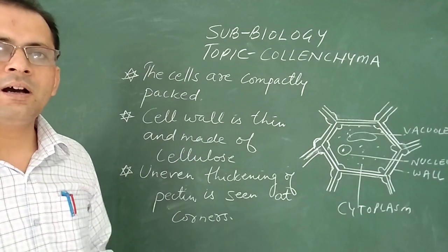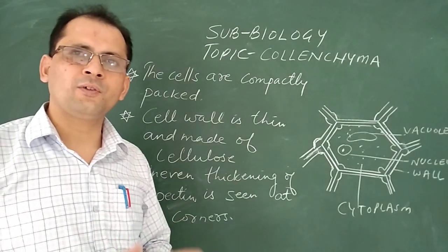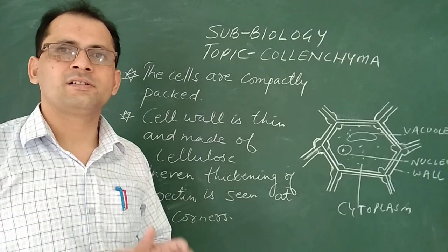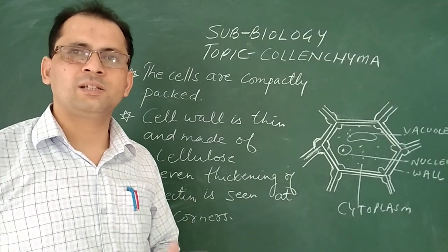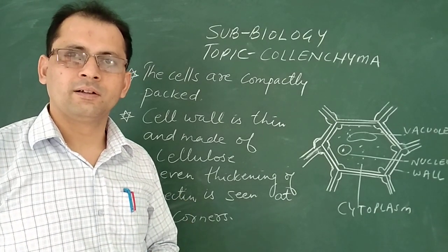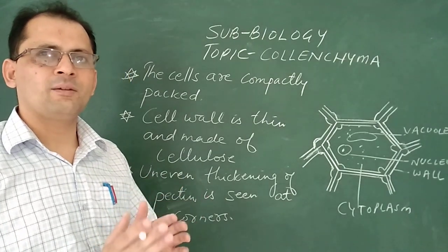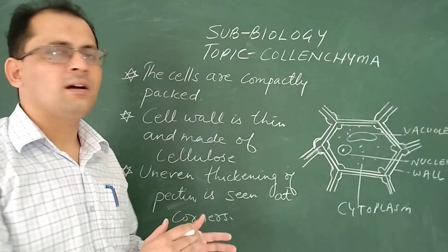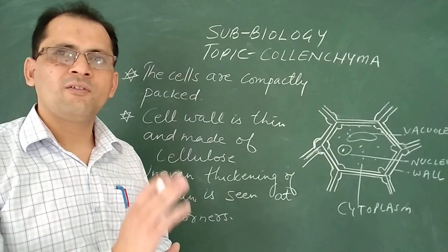So collenchyma, I told you, is a soft living tissue which is present in the plant and it is responsible for the flexibility of the plant. So basically you will find it at the midrib of the leaf, you will find it in the stem, and this collenchyma makes the plant body flexible.